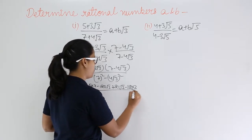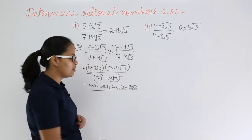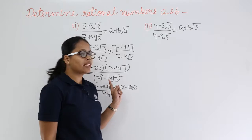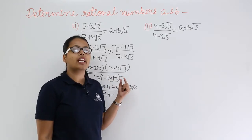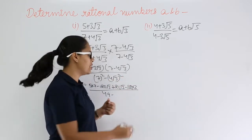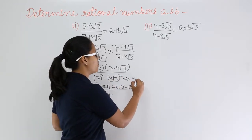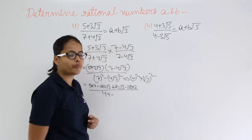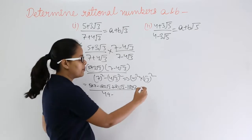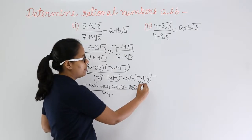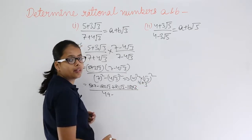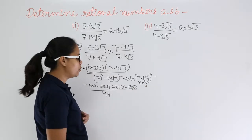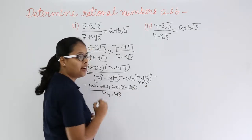Now in the denominator: 7² gives 49 minus. You can take the square separately: 4² times (√3)², which is 4² into (√3 whole square). So 4² is 16 and (√3)² is 3, because the square root and square cancel. 16 times 3 is 48.